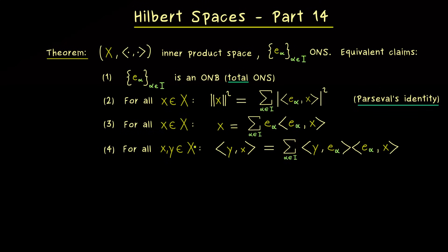Finally, part 4 says that the inner product can also be represented by such an infinite sum. What we want to prove is that all these claims are equivalent, which means if you know one, you know all the others as well. It's a really important theorem, because it says with an ONB we can do all these nice calculations.